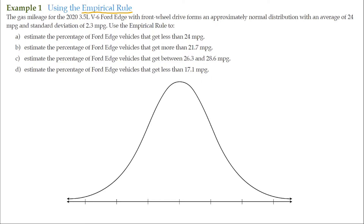So what the empirical rule states is that if we have a mean — I'm going to put in a mean right here, this is mu. Mu is the mean of a population. The mean is the measure of central tendency; it goes right in the center. It's where everything tends to gather, which is why the normal curve is highest at the middle.